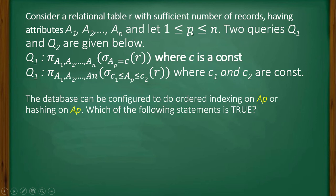Let 1 ≤ p ≤ n. Two queries Q1 and Q2 are given below. Q1 is π(A1, A2, ..., An)(σ(Ap = c)(R)) where c is a constant.